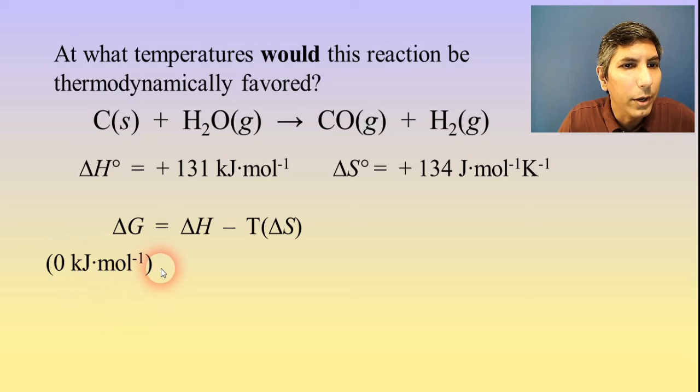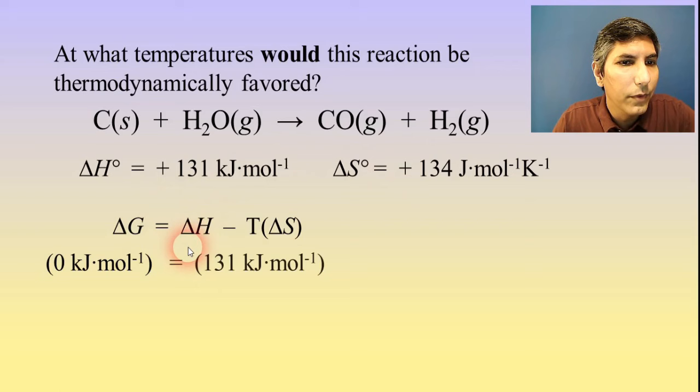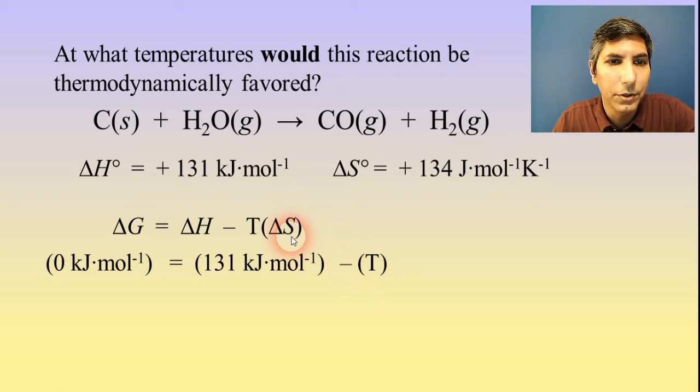Now delta H, we're going to assume that delta H and delta S don't change as temperature changes. It's not completely true, but it's almost. So we're going to just go ahead and plug in those numbers. Delta H is 131 kilojoules per mole. And then the T is for temperature. We're solving for that threshold temperature. So that's our unknown. And delta S, once again, we have to use consistent units. So it's 0.134 kilojoules per mole per kelvin.